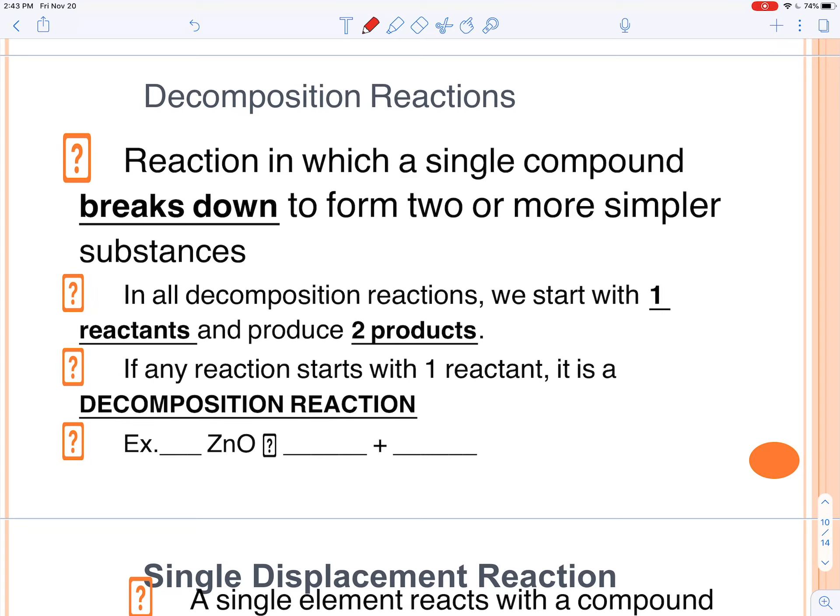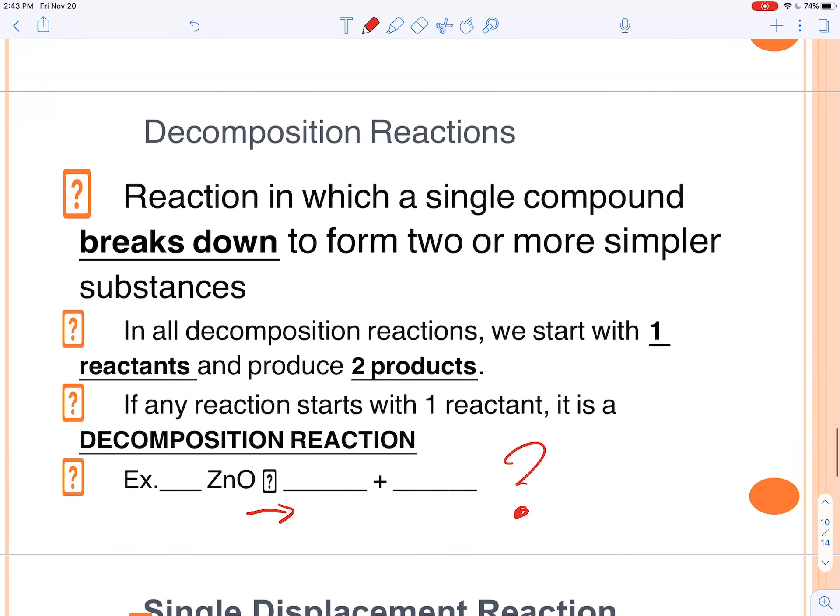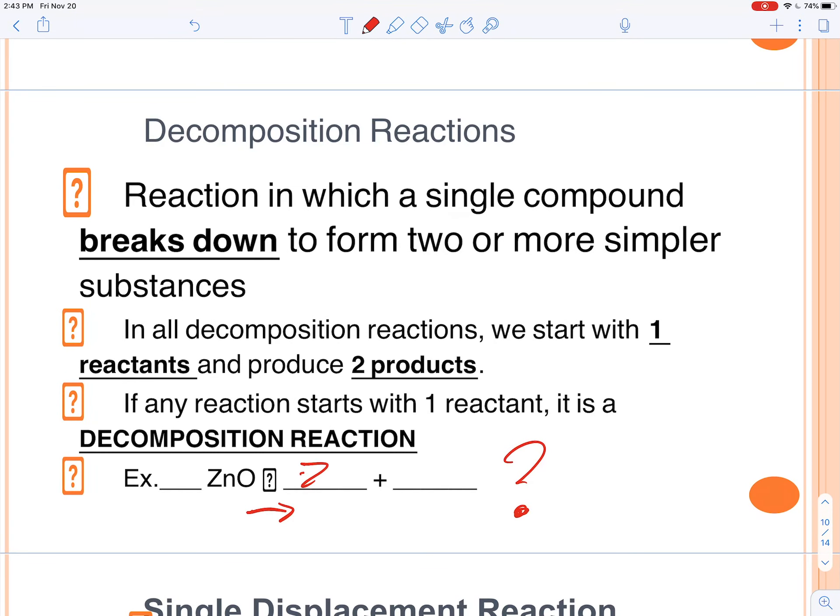Decomposition is kind of like the opposite of that where we start with one and we end up with two products. So zinc oxide is going to break down here. What do you think the two products are?